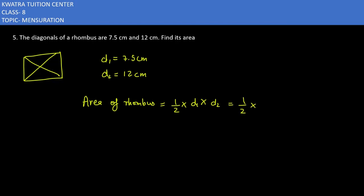Half value as it is. How much is d1? It is 7.5. How much is d2? It's 12.